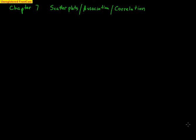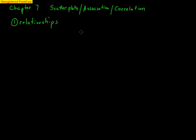We're going to start a new major topic beginning in Chapter 7. It's on the relationship between two variables — specifically two quantitative variables. What we mean by relationships is: does one variable affect or impact another variable? There are several different words and terminologies we're going to learn.